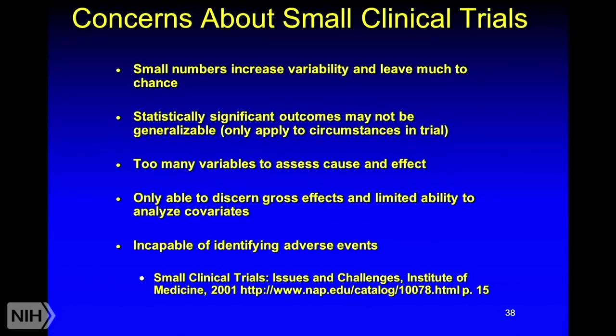Another issue is that too many variables are present in a small study to assess cause and effect. With really sick patients, there's a lot going on, and you may not be able to balance all those variables between the test and control groups. You may only be able to discern gross effects — like whether people lived or died — and have very limited ability to analyze baseline factors. If you study 25 people and a side effect occurs in one in every 50, you may see nothing. Absence of evidence is not evidence of absence.